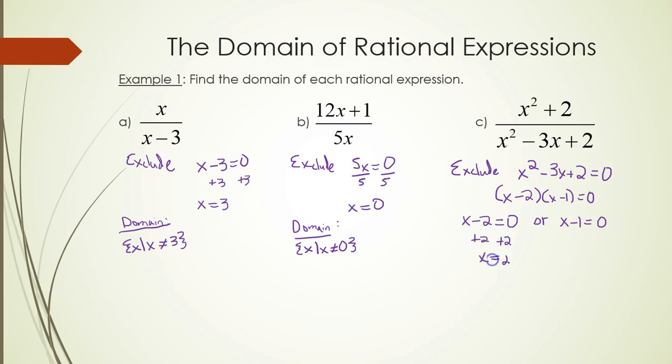So it looks like the two numbers that have to be excluded from the domain would have to be 2 and 1. So the domain will be all real numbers x such that x cannot equal 1 or 2.